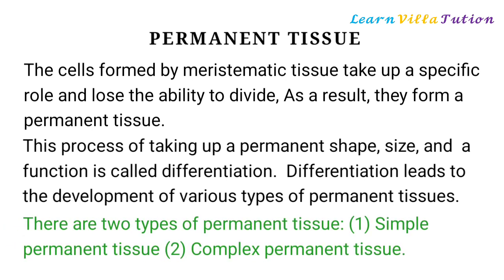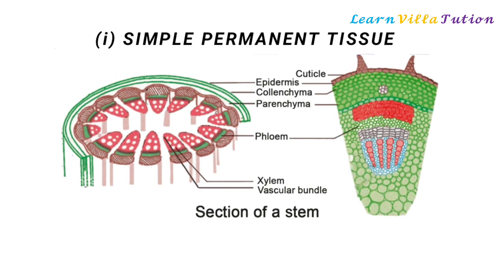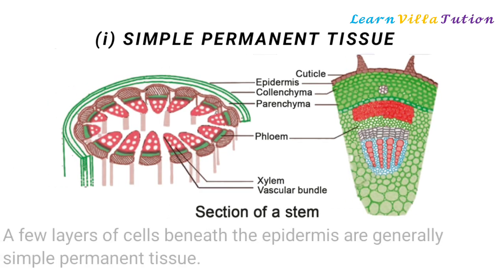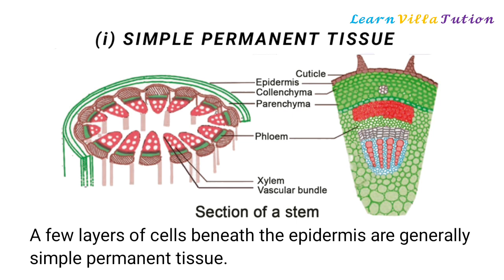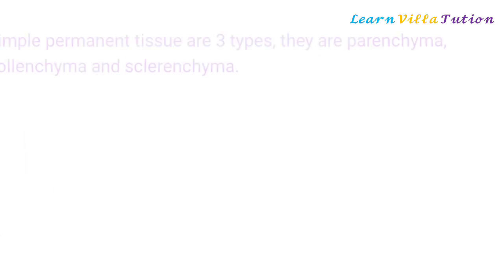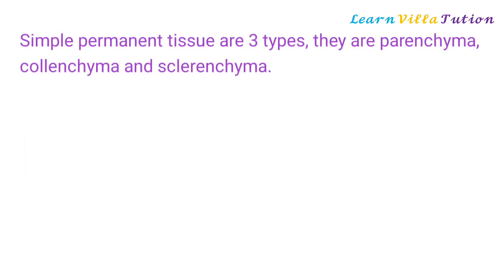There are two types of permanent tissue. First, simple permanent tissue. Second, complex permanent tissue. A few layers of cells beneath the epidermis are generally simple permanent tissue. Simple permanent tissues are of three types: parenchyma, colenchyma, and sclerenchyma.